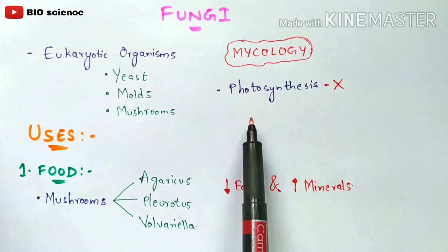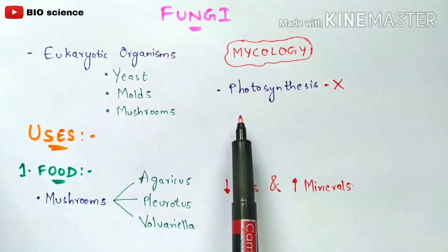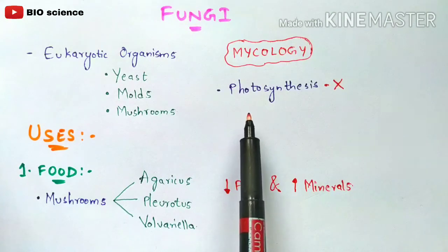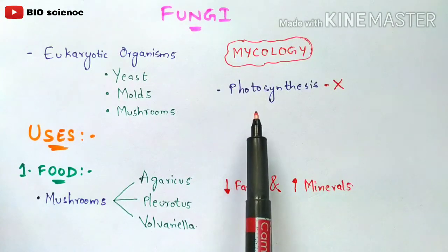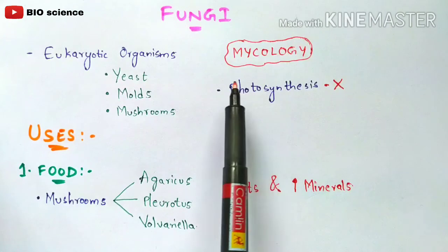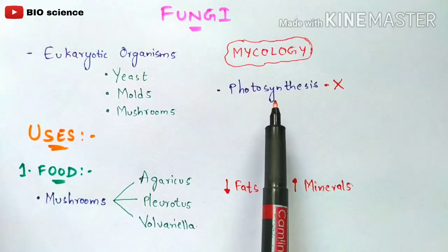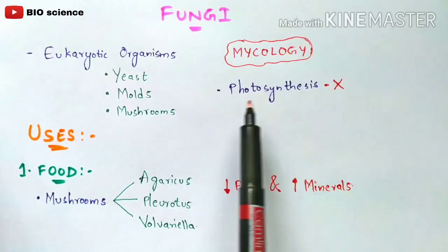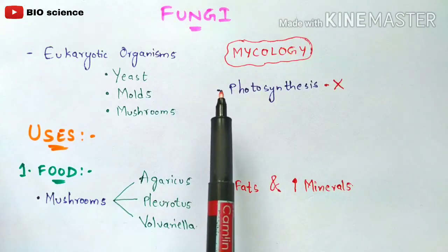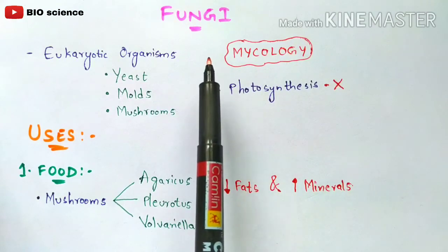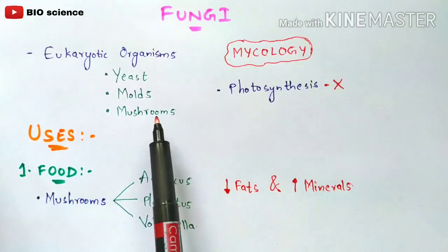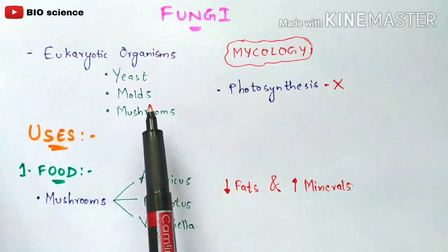Photosynthesis is a process where an organism utilizes carbon dioxide and sunlight from the environment for the preparation of its own food material. However, this process does not occur in fungi. The best examples of fungi in daily use are yeast, molds, and mushrooms — even mushrooms are considered fungi.